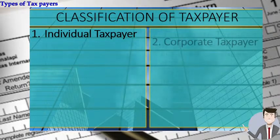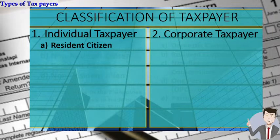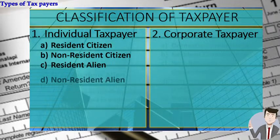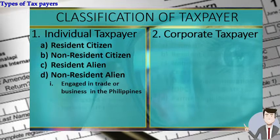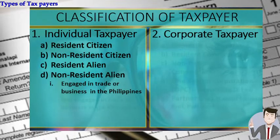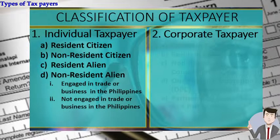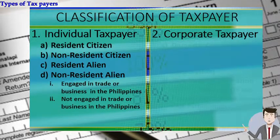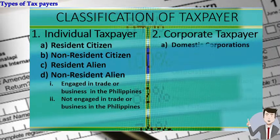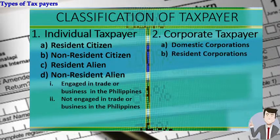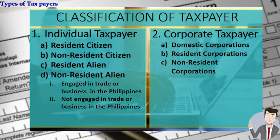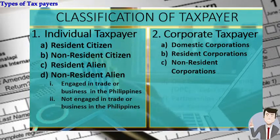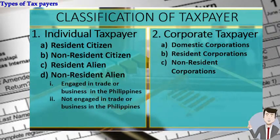We have individual taxpayer and corporate taxpayer. For individual taxpayer, we have resident citizen, non-resident citizen, resident alien, and non-resident alien. Non-resident alien is classified into two: engaged in trade and those not engaged in trade. For corporate taxpayer, we have domestic and resident corporation, and non-resident corporation for corporations organized or incorporated under foreign law.